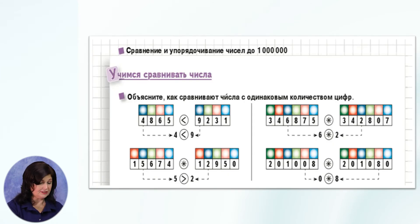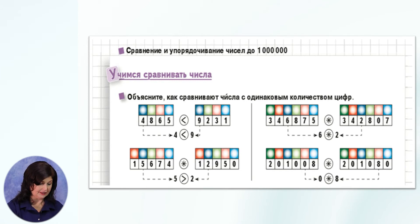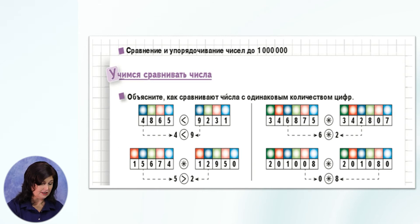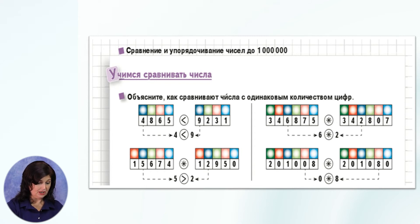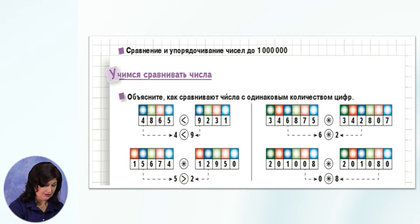Откройте свои учебники на странице 16. Учимся сравнивать числа. Давайте попробуем сравнить числа 4865 и 9231. Число разрядов в этих числах одинаковое, так как при записи этих чисел использовали одинаковое количество цифр. Поэтому сравнивать эти два числа мы будем поразрядно. Каждый разряд обозначен одинаковым цветом. Начинаем сравнение с наивысшего разряда, то есть с единиц тысяч. Сравниваем 4000 и 9000: 4 меньше 9, значит и всё число меньше. 4865 меньше, чем 9231.